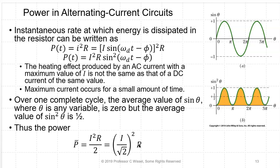The power company really wants to sell you power because power times time is energy, and that's what they charge you for — kilowatt hours. The instantaneous rate at which energy is dissipated in a resistor is I squared R. But we don't have a constant current like in a DC circuit. Instead we use I equals the sine of omega-D times t.